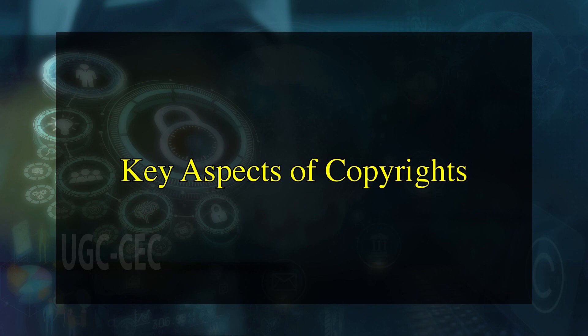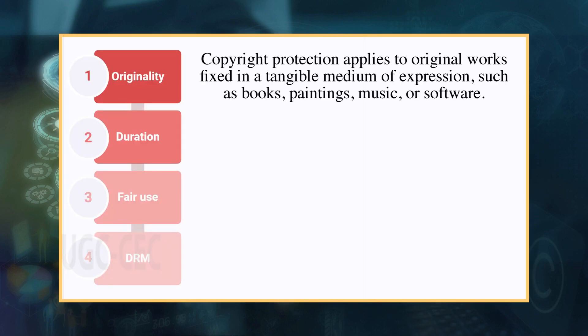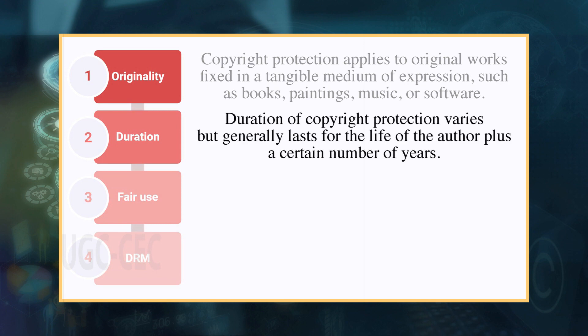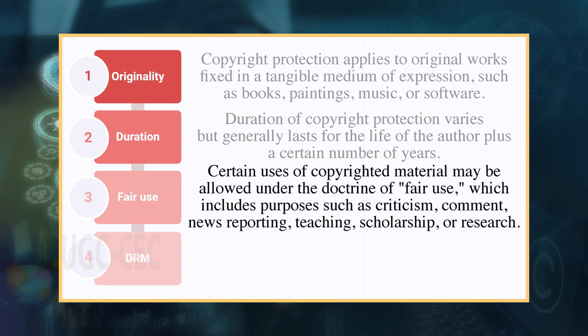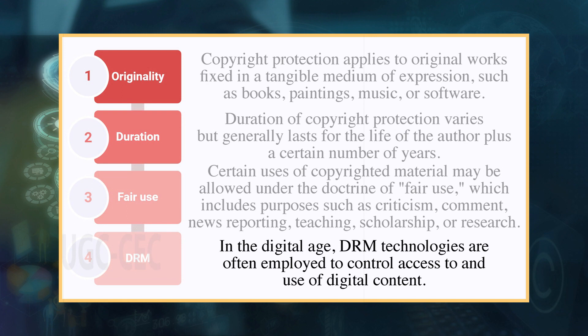Now we will discuss key aspects of copyrights. Originality: Copyright protection applies to original works fixed in a tangible medium of expression such as books, paintings, music or software. Duration: The duration of copyright protection varies but generally lasts for the life of the author plus a certain number of years. Fair use: Certain uses of copyrighted material may be allowed under the doctrine of fair use, which includes purposes such as criticism, comment, news reporting, teaching, scholarship or research. Digital Rights Management (DRM): In the digital age, DRM technologies are often employed to control access to and use of digital content.